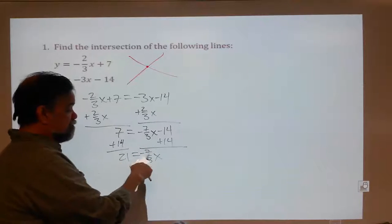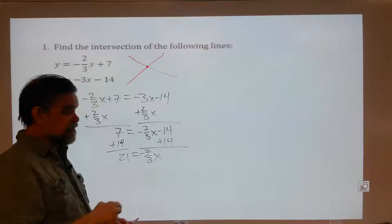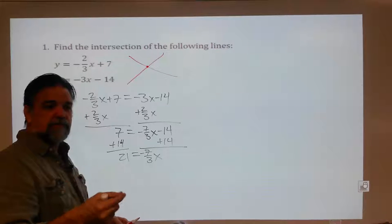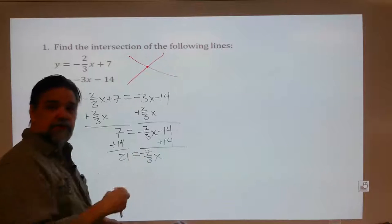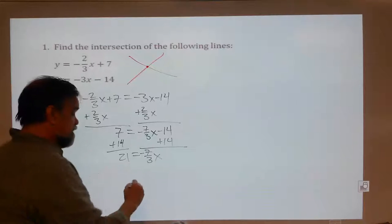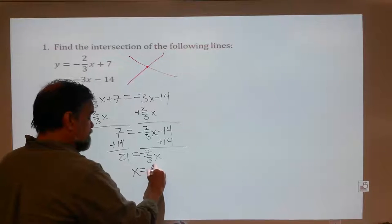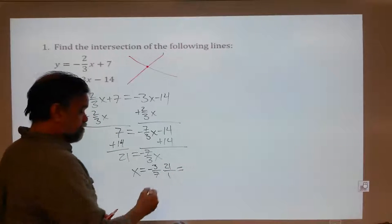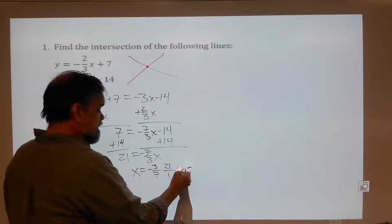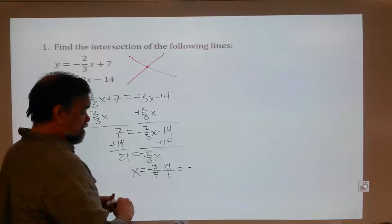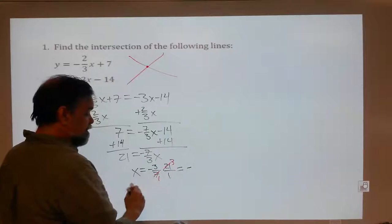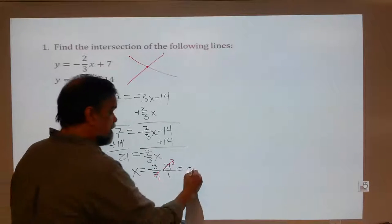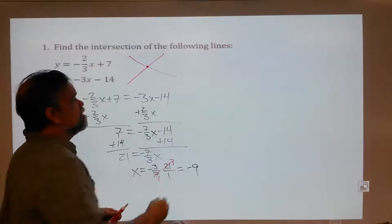Adding 14 to both sides, I get 21 equals negative seven-thirds times x. If I have 21 equals a number times x, I divide by this number. Dividing by negative seven-thirds is the same as multiplying by the reciprocal, which is negative three-sevenths. So x equals negative three-sevenths times 21. Negative times positive is negative, and 21 over seven is three, so three times three is nine. I get x equals negative nine.